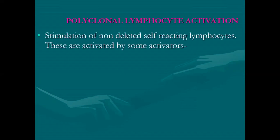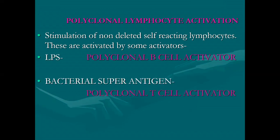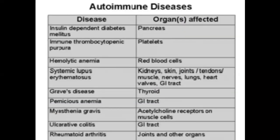There is also polyclonal lymphocyte activation — stimulation of non-directed self-reactive lymphocytes. These are activated by polyclonal B-cell activators, bacterial superantigens, and polyclonal T-cell activators. Examples of autoimmune diseases include insulin-dependent diabetes mellitus (due to pancreatic effects), immune thrombocytopenic purpura, haemolytic anemia, systemic lupus erythematosus affecting kidney, skin, joint, and tendons, muscles, and GIT. Graves' disease affecting the thyroid, pernicious anemia affecting the GIT, myasthenia gravis affecting acetylcholine receptors and muscle cells, ulcerative colitis in the GIT, and rheumatoid arthritis in the joint and other organs.